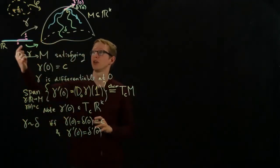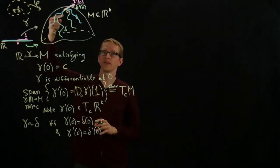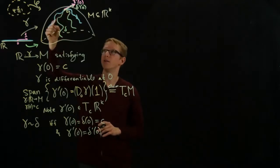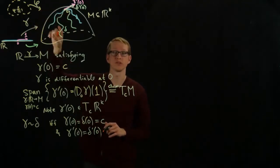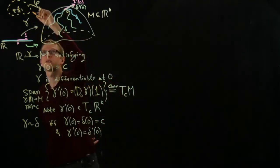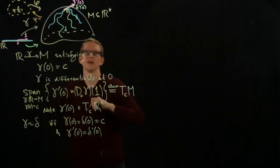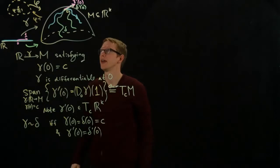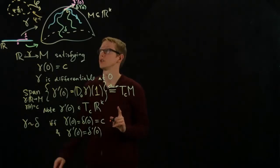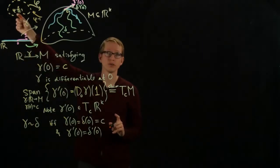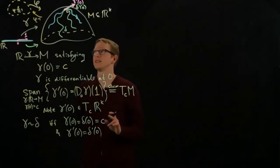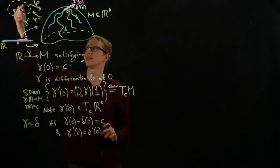Then, what we can do is we can map this path forward here, and because this path is contained in M, I can use the inverse of this coordinate patch to give a path in this open subset, and that path satisfies the condition that at 0, it goes to phi inverse C.